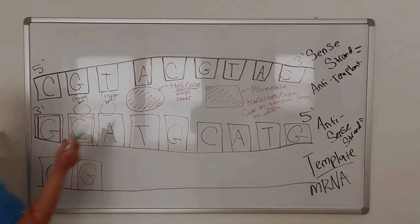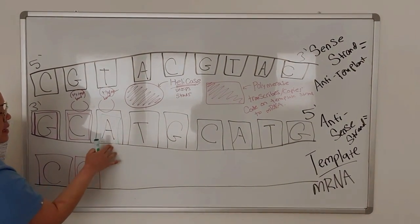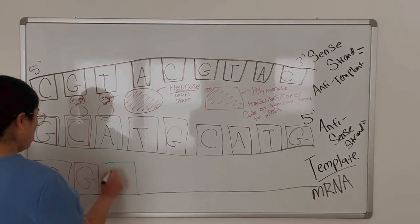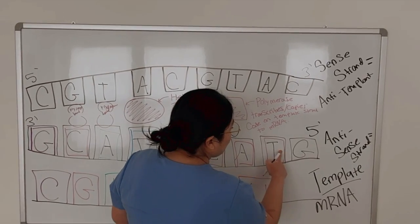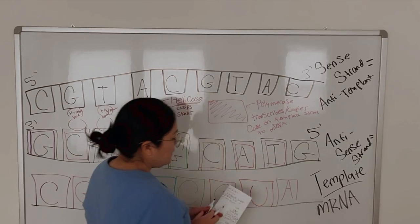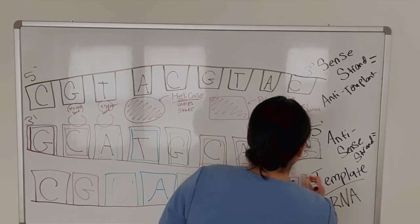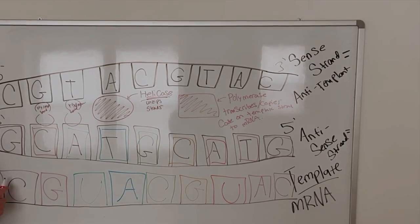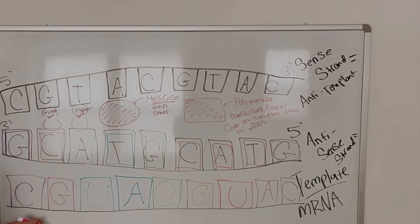Next, we have adenine in DNA. What base pairs with adenine in RNA? Uracil, right? So it's going to make a uracil. Next, we have thymine. What pairs with thymine in RNA? Adenine. Lastly, we have guanine. So what pairs with guanine in RNA? Cytosine. So this is how the polymerase enzyme copies the information from the template strand to make the mRNA strand.